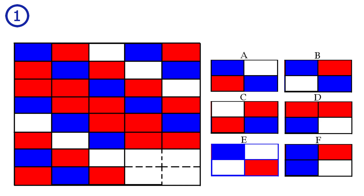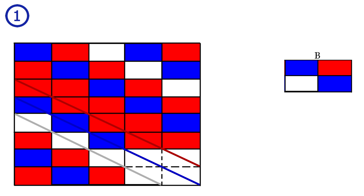Puzzle number one. In this diagonal we have red, in this we have blue, and in this we have white, giving answer B as the correct solution.